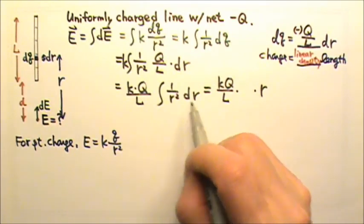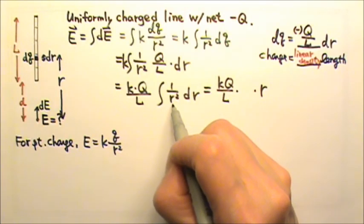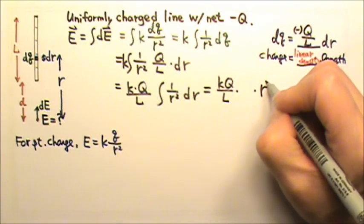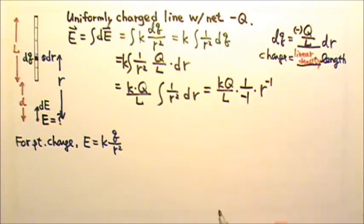Because when we integrate, we gain 1 degree of power. So degree of power goes from r to the negative 2. Negative 2 plus 1 gives us negative 1. And then we have to multiply by 1 over negative 1. And what next?